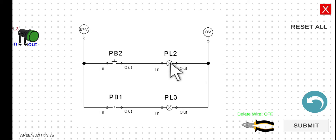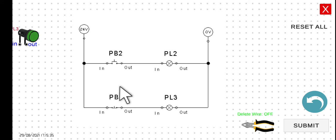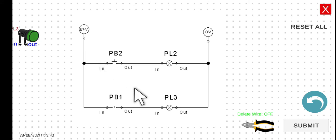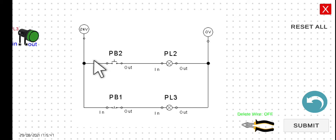To summarize: when we start our breaker, the initial condition is PL2 is turned off and PL3 is turned on. Now let's wire the circuit and simulate it later. We will wire this diagram level by level, wire per wire. The first wire connects 24 volts to the input of PB2.